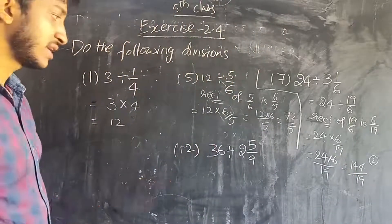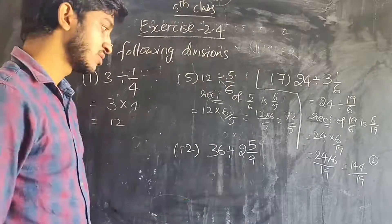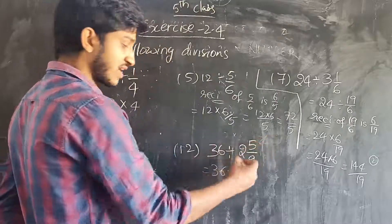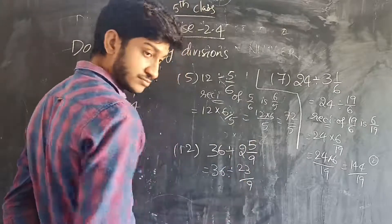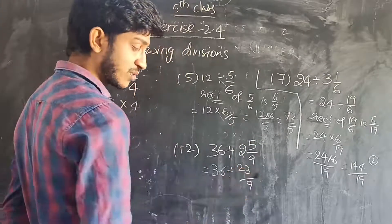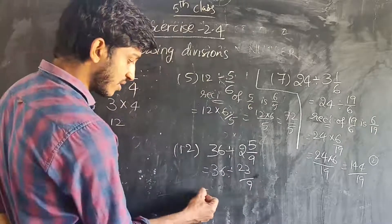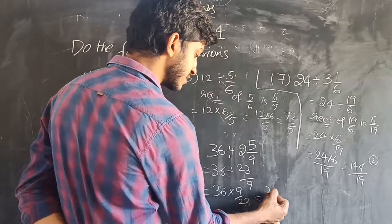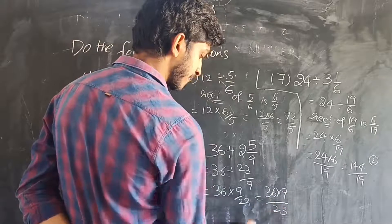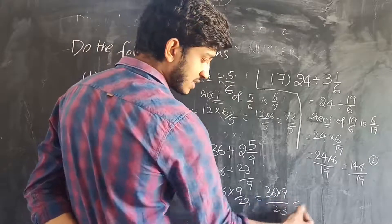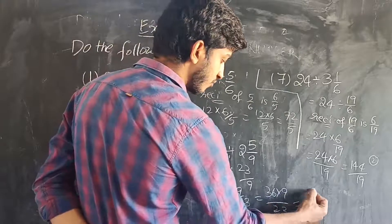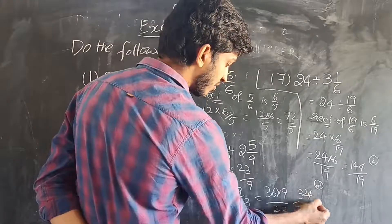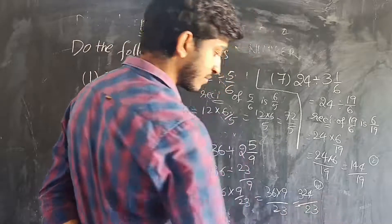So, problem 12, 36 divided by 2 5 by 9. So 2 5 by 9, we cannot change to improper fraction. So 36 divided by, 9 twos is 18, 18 plus 5 is 23 by 9. So 23 by 9, the reciprocal is 9 by 23. So multiply 36 into 9 by 23. That is equal to 36 into 9 by 23. Multiply, 9 sixes are 54, 5 carry, 9 threes are 27, 27 plus 5 is 32. 324 divided by 23.